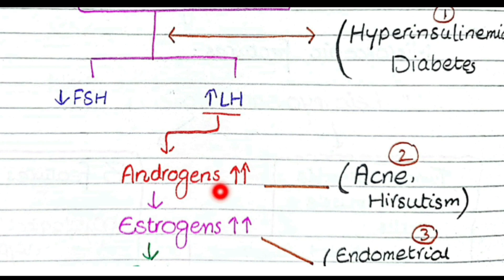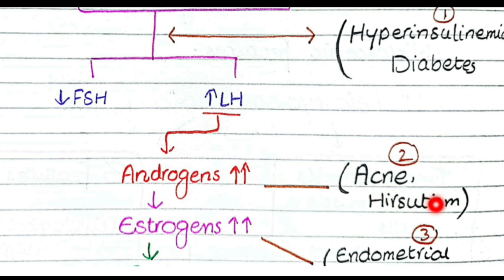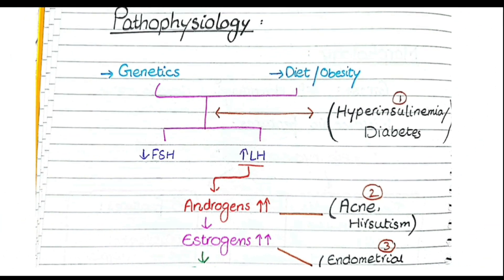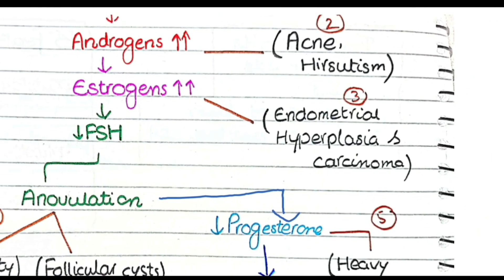In polycystic ovarian syndrome there is an increase in androgen levels. Since androgens are normally male hormones, an increase in androgens in females will cause acne and hirsutism — meaning development of hair on the face. So acne and hirsutism are important clinical features of polycystic ovarian syndrome.